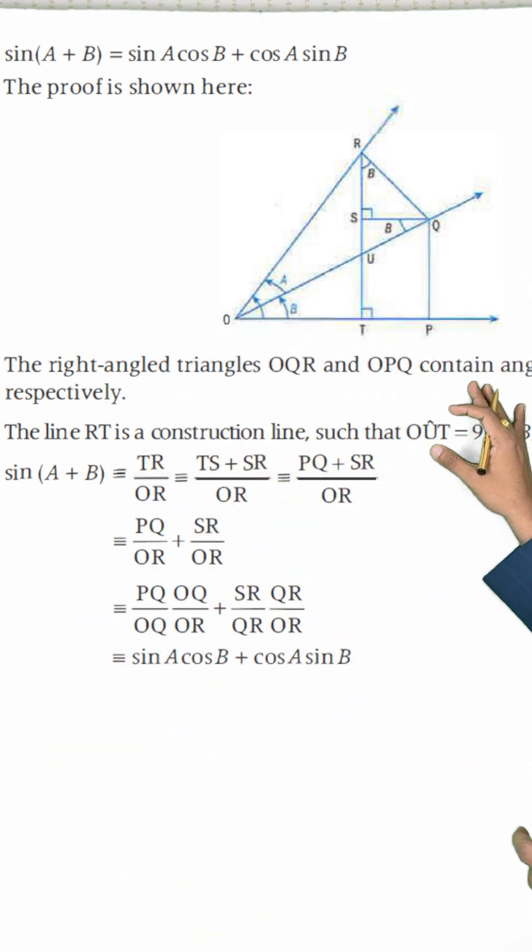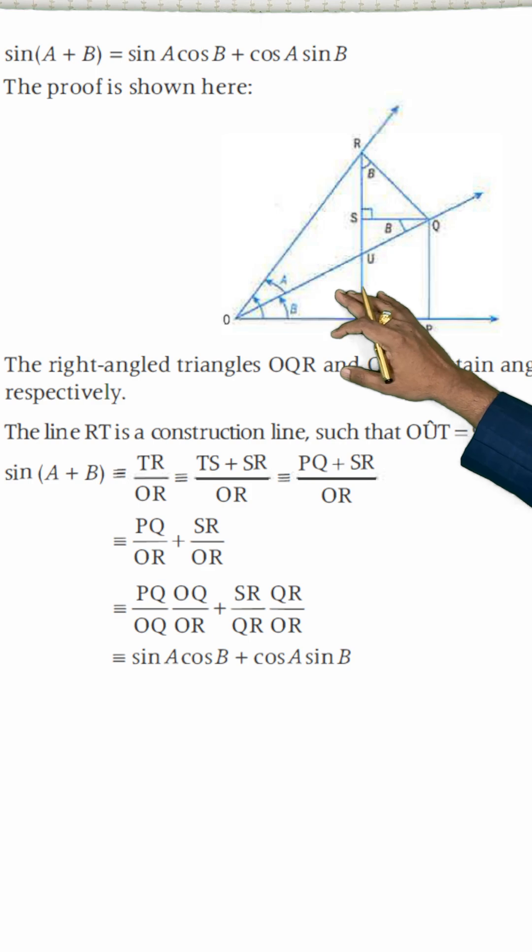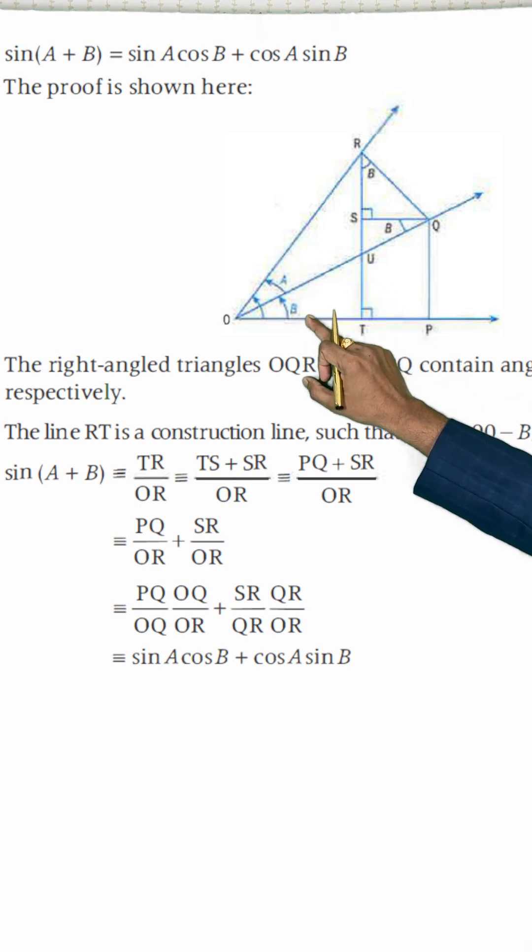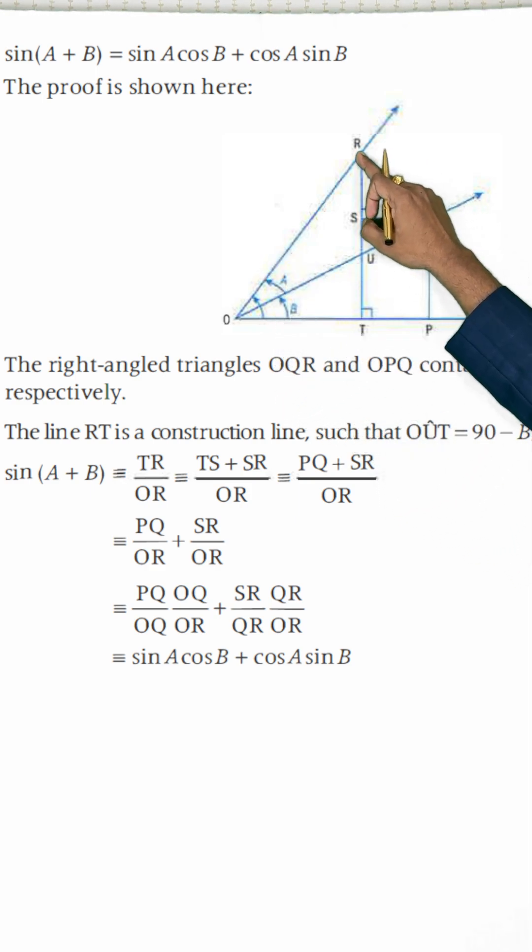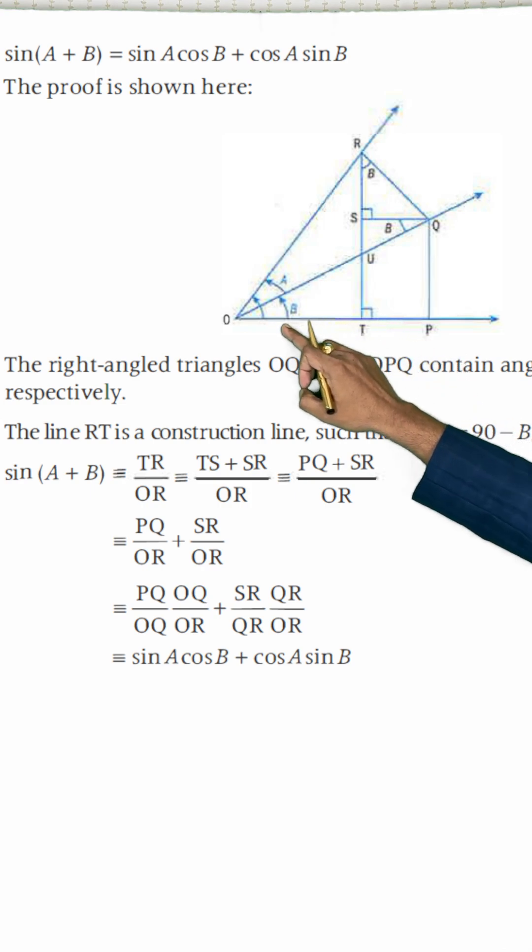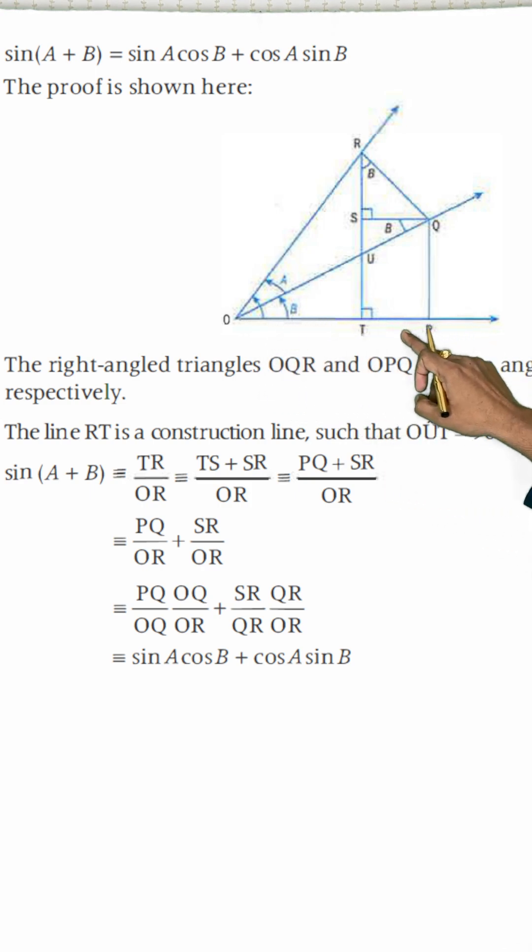If you see this diagram I have drawn here for you, in this diagram you can see A is an acute angle and B is also an acute angle. The total angle is sum of A plus B. And there is a perpendicular RT, which is perpendicular to OP.